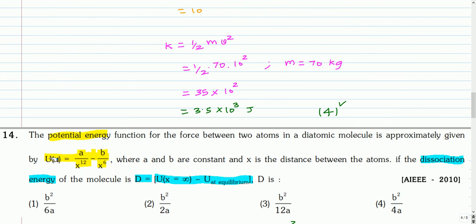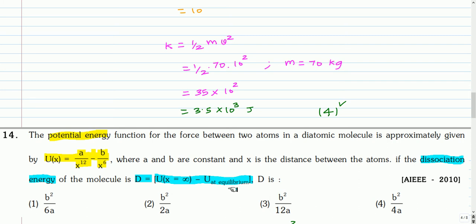This is the next question. The potential energy function for a force between two atoms in a diatomic molecule is approximately given by u = a/x¹² − b/x⁶, where a and b are constants and x is the distance between the atoms. If the dissociation energy of the molecule D is defined as u at x = ∞ minus u at equilibrium, then D is — you can pause the video and attempt this question.